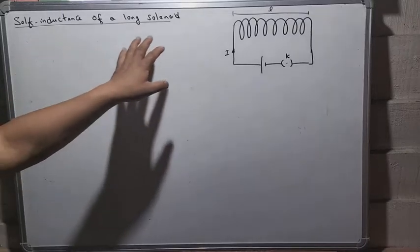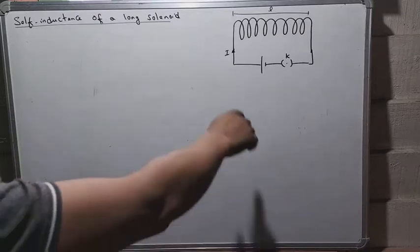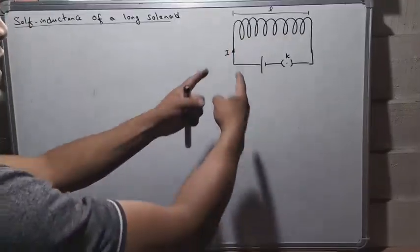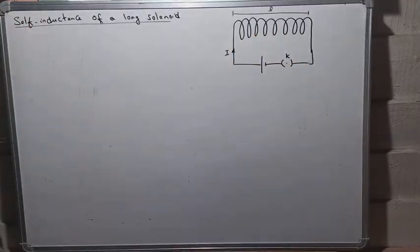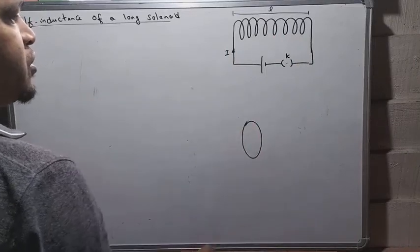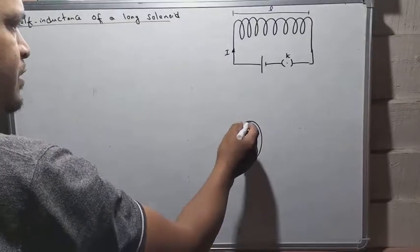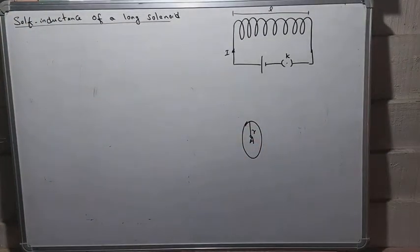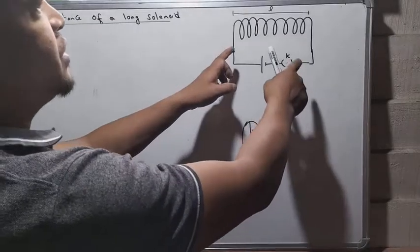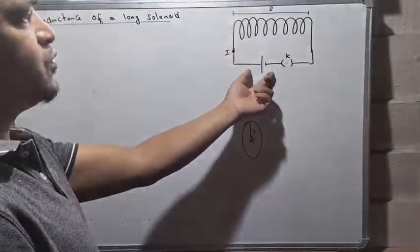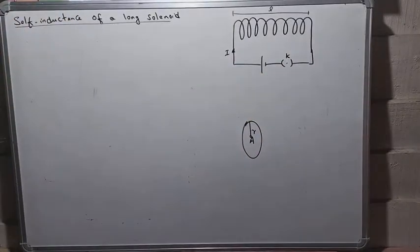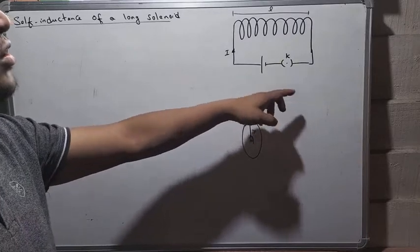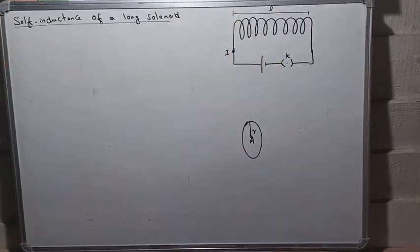Let us find out the self-induction of a long solenoid. The length of this solenoid is small l, the area of cross-section is capital A, and the radius is small r. The two ends of the solenoid are connected to a cell through a tapping key. When this key is on, a current I starts flowing in the coil, and this current produces a magnetic field inside the coil.